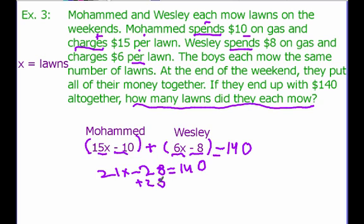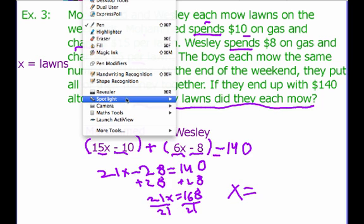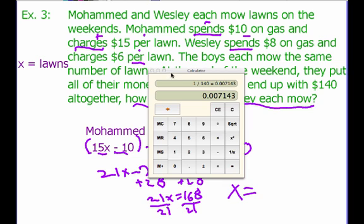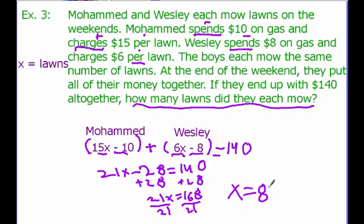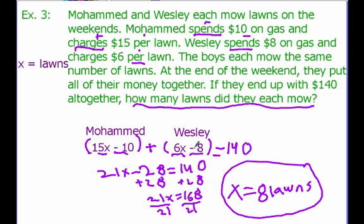If I add 28 to both sides, I get 21x equals 168. Dividing 168 by 21 gives us an answer of 8. So my answer is that they each mowed 8 lawns. We just set up our equation to model the situation — this is how much money Muhammad had, this is how much money Wesley had — we add them together to get $140, and then we solve that to figure out the answer is 8 lawns.